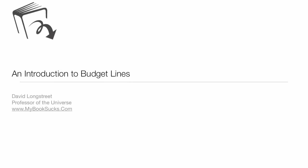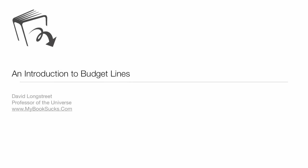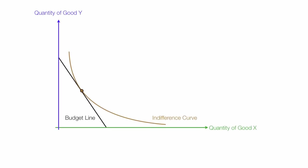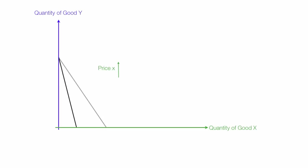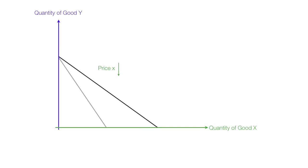In this tutorial I'm going to discuss budget lines. This video is part of a playlist, you can see the link below. Budget lines are typically taught alongside indifference curves, but in this tutorial I'm just going to discuss budget lines. I'm going to show you what happens when the price of X goes up and what happens when the price of X goes down, and I'll discuss this in a lot of detail.